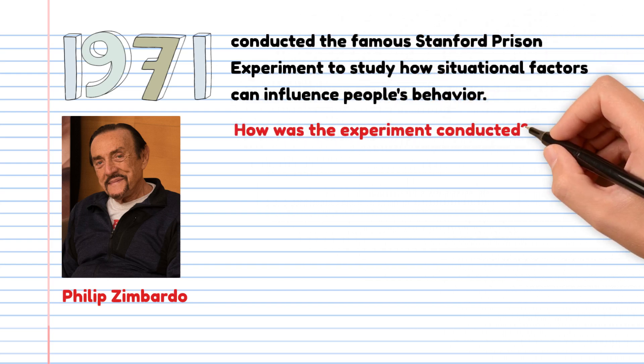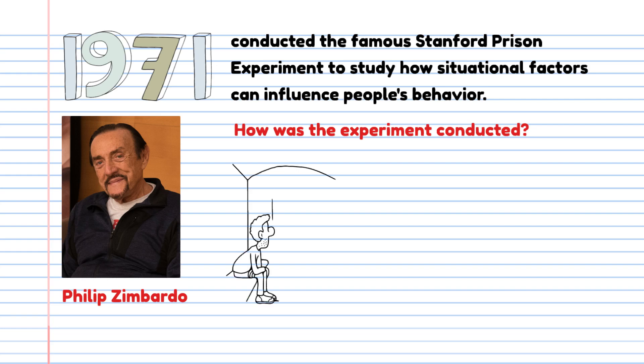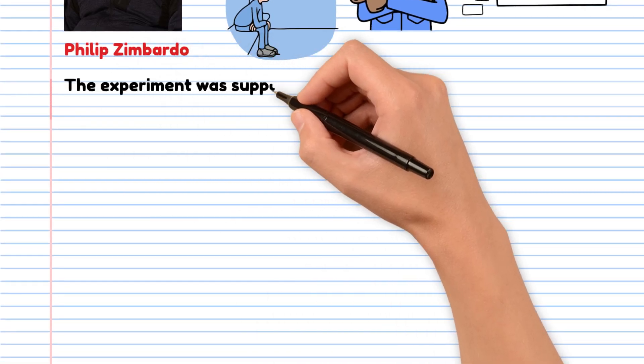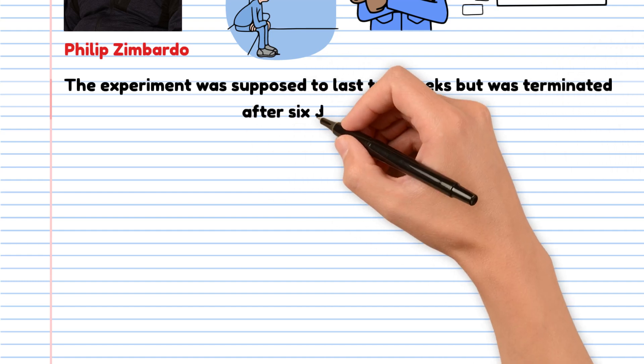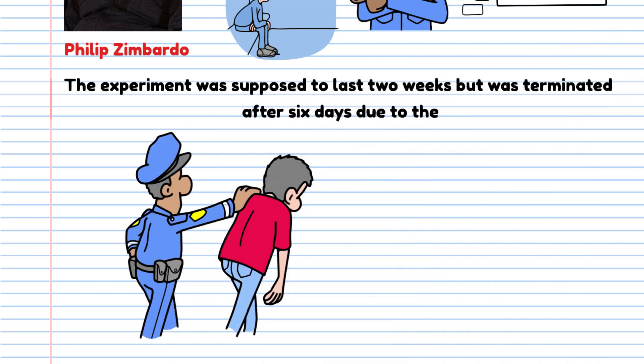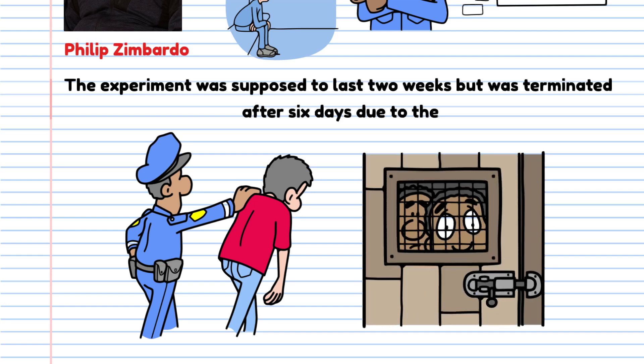How was the experiment conducted? Students were randomly assigned roles of prisoners and guards in a simulated prison set up in the basement of Stanford University. The experiment was supposed to last two weeks but was terminated after six days due to the escalation of cruelty from the guards and the stress experienced by the prisoners.